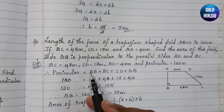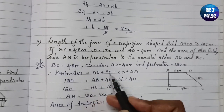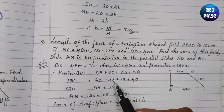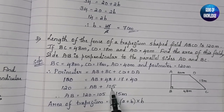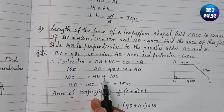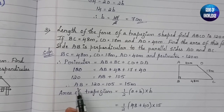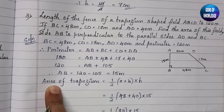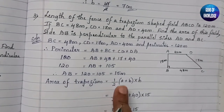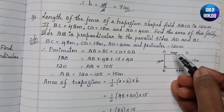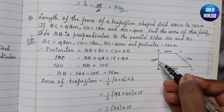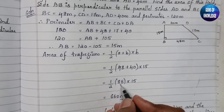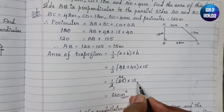Perimeter = AB + BC + CD + DA = 120. So AB + 48 + 17 + 40 = 120, meaning AB + 105 = 120, so AB = 15 meter. Now using the trapezium area formula: area = half into (a + b) into height = half into (48 + 40) into 15 = half into 88 into 15 = 44 into 15 = 660 meter square.